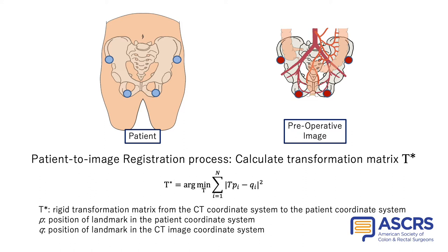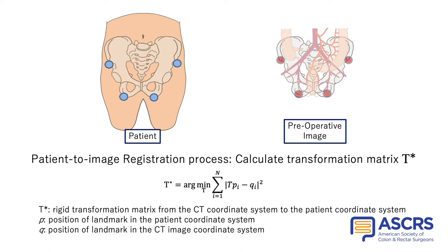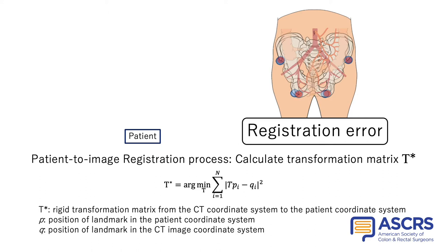However, there may be differences in the position of landmarks between the preoperative images and the patient on the operating table due to various factors, which result in registration error. It is necessary to minimize registration error as much as possible to enable more accurate navigation. Among the various types of registration error, the distance between points on a computer image after registration and the corresponding points on the patient is called target registration error, or TRE.